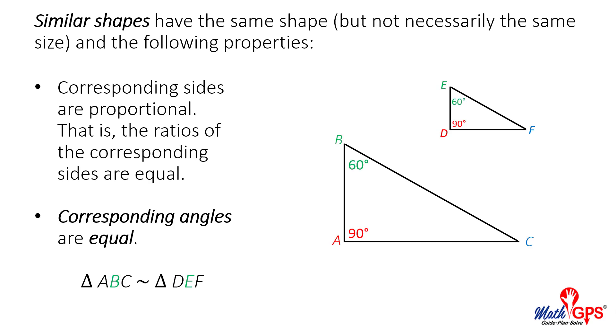Angle B in the larger triangle corresponds to angle E in the smaller triangle. They each measure 60 degrees.